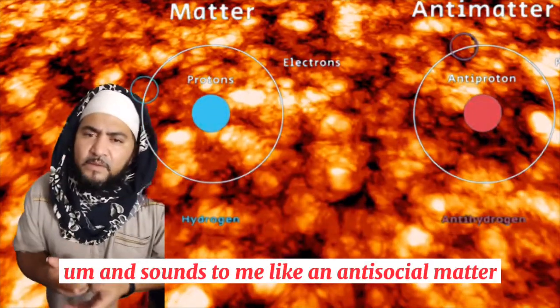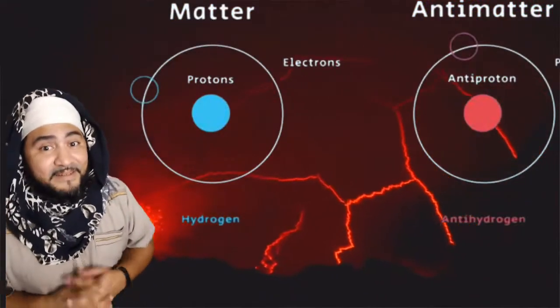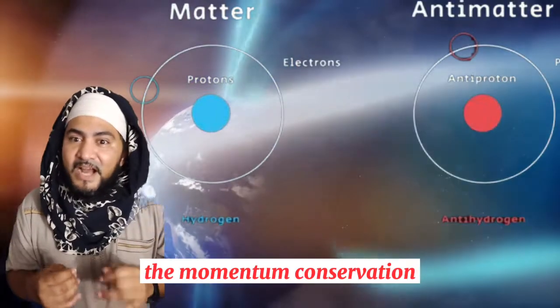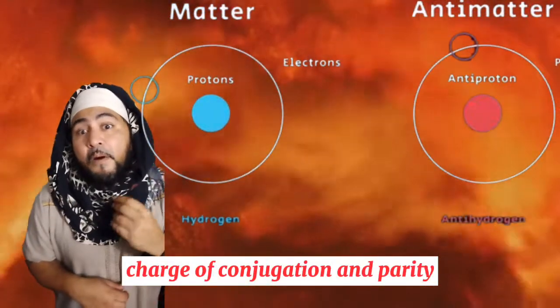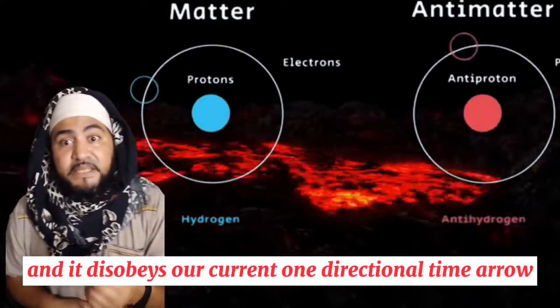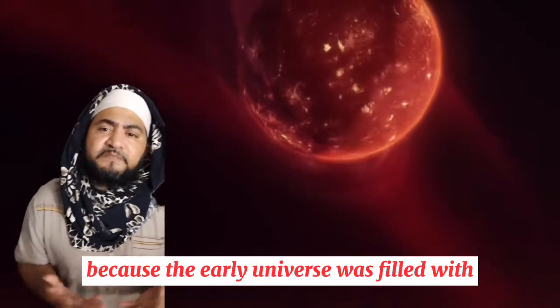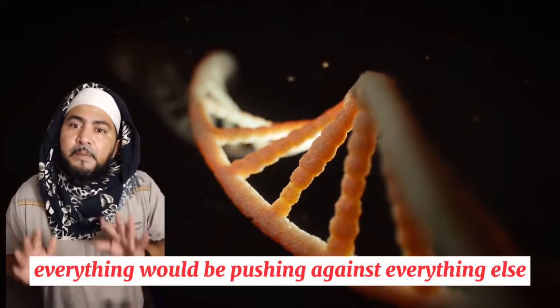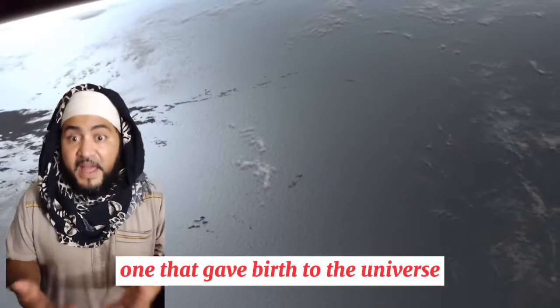Anti-matter actually disobeys energy and momentum conservation. It disobeys symmetric charge conjugation and parity, and it disobeys our current one-directional time arrow and causality. Because the early universe was filled with this type of self-repelling, disobedient matter, everything would be pushing against everything else, and that would account for what gave birth to the universe.